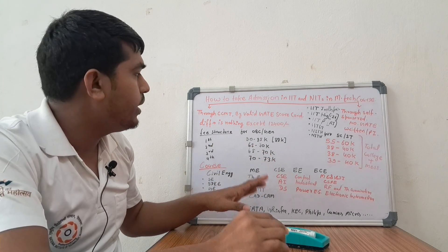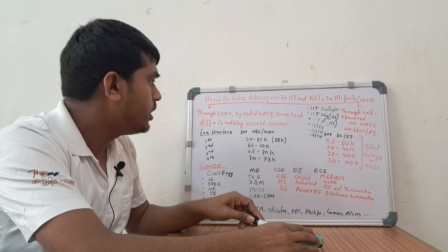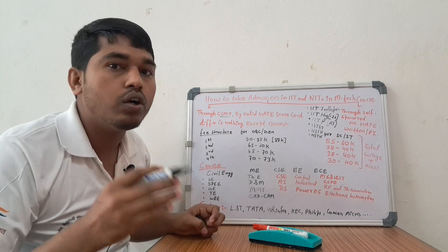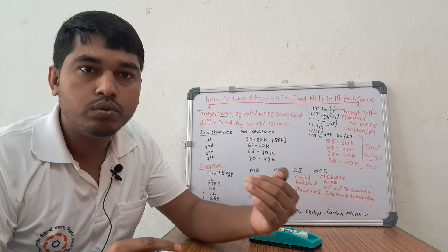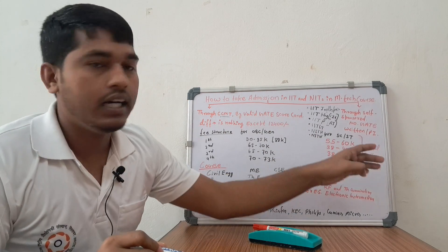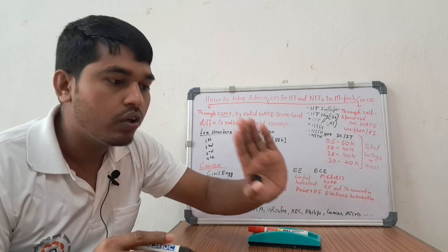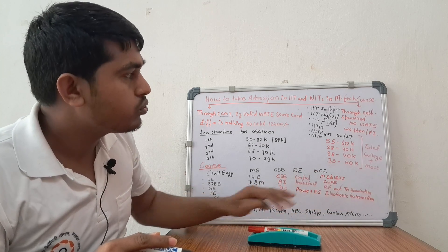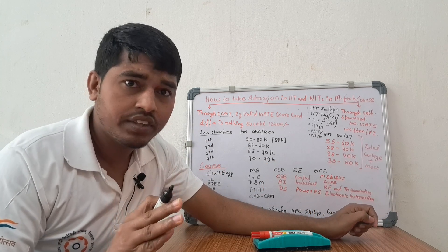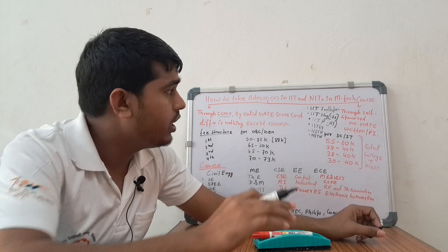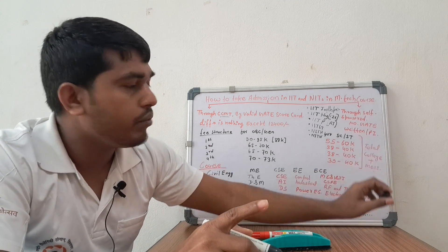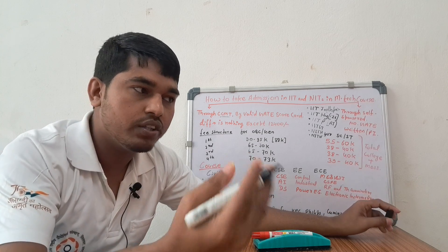Admission happens in two ways. First, through CCMT — NITs take admission through CCMT, and IITs take admission through COAP, if you have a valid GATE scorecard. The other way is through the self-sponsor category, where no valid GATE scorecard is required. In this process there are two things: a written test and a personal interview.